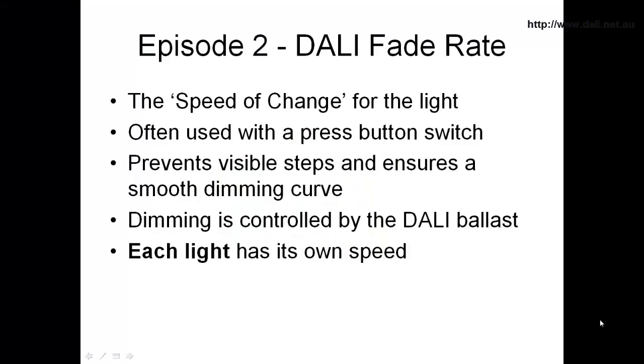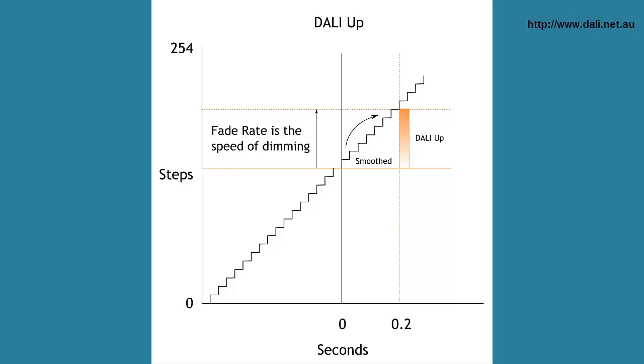Okay, let's get started. Fade Rate is the speed that the light will dim. By having access to the Fade Rate setting we can control exactly how the light will look. Dali has digital steps so when the light dims we want it to be smooth without showing those digital steps.